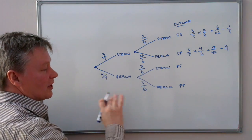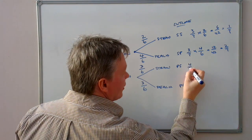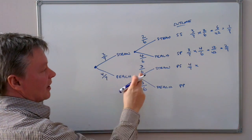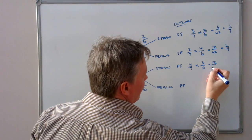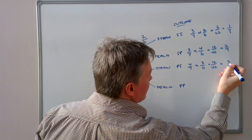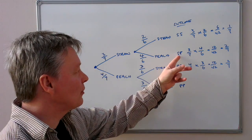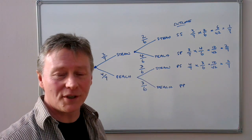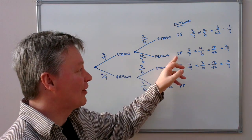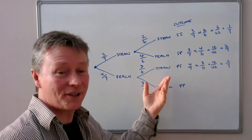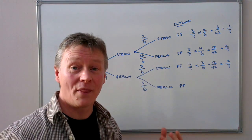For peach then strawberry, the first probability is four sevenths and the second is three sixths, giving 12 out of 42, which is two out of seven. That's the same as strawberry then peach, which makes sense because both SP and PS represent picking one of each flavour — it's just the order that differs, so the probabilities should be the same.